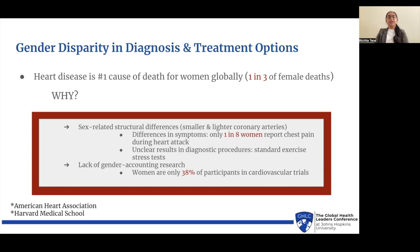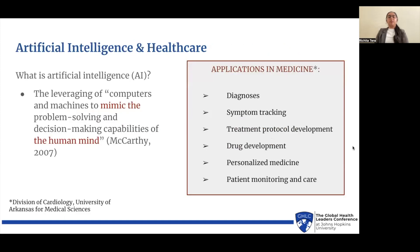There are also unclear results in diagnostic procedures, such as standard exercise stress tests. This is further perpetuated by the lack of gender-accounting research — women are only represented as 38% of participants in cardiovascular trials. An important field of technology that can combat this problem is artificial intelligence, or AI, which is the leveraging of computers and machines to mimic the problem-solving and decision-making capabilities of the human mind. There have been many applications of AI over the last decade in healthcare and medicine, as outlined on this slide.